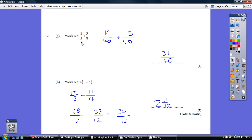So, 2 fifths needs to be converted into something over 40. What do we do to the 5 to turn it into a 40? We times it by 8. So do the same to the numerator, 2 times 8 is 16. 8 times what is 40? That's 5. Do the same to the top, 3 times 5 is 15.